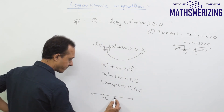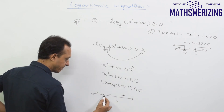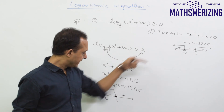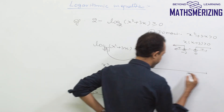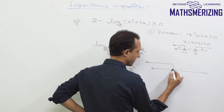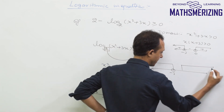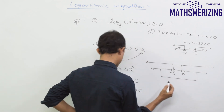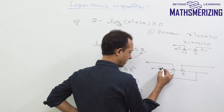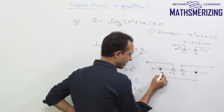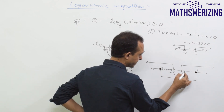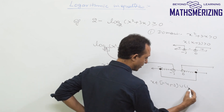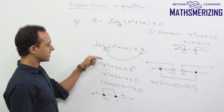On the number line, the critical points are −4 and 1, with the expression being negative between them, so we need x in [−4, 1]. Taking the intersection with the domain (x < −3 or x > 0), the final answer is x ∈ [−4, −3) ∪ (0, 1].